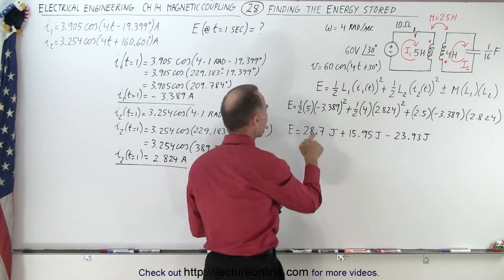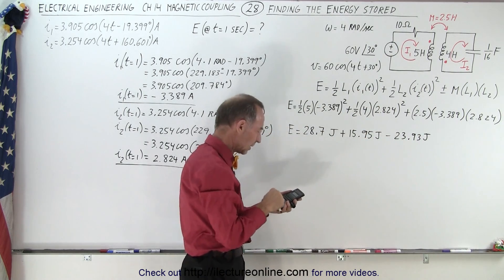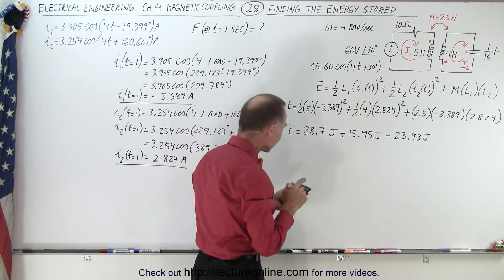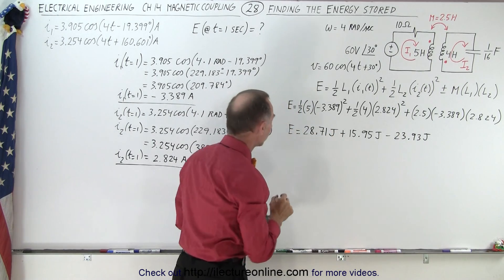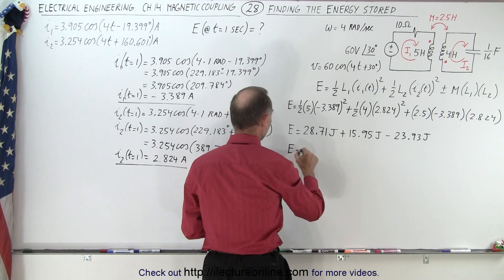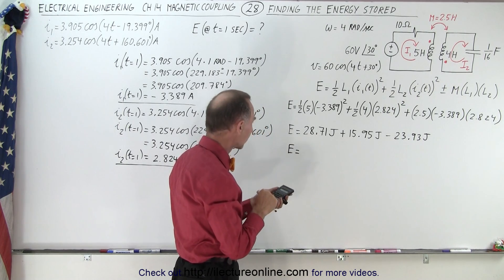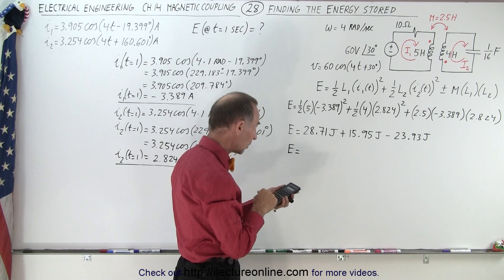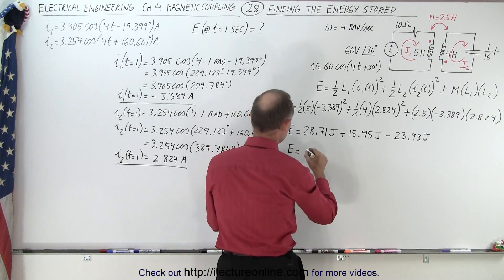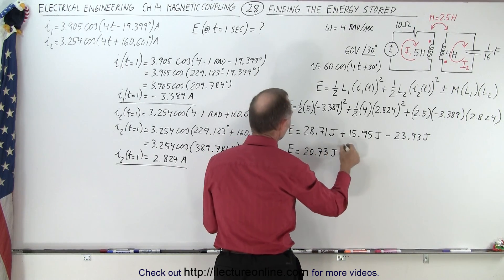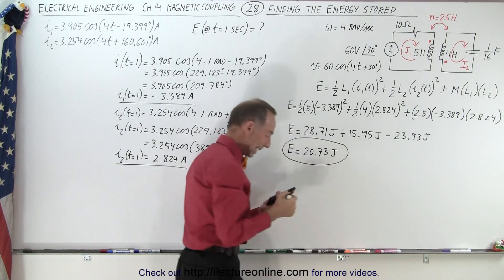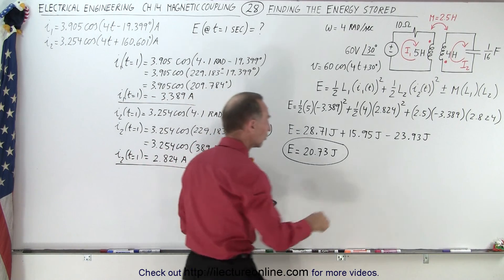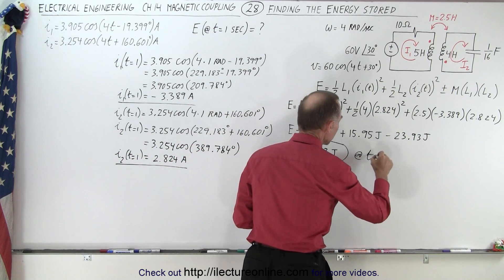I'm going to do this one again just to get a better value. 3.389 squared times 2.5 gives me 28.71. Now when we combine that, we have 28.71 plus 15.95 minus 23.93, which gives us 20.73 joules. That is the energy stored in the two inductors and the mutual coupling at that moment in time, at t equal 1 second.